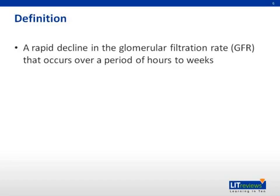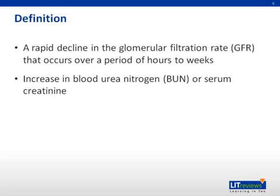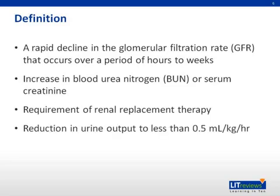Acute renal failure is defined as the rapid reduction of glomerular filtration rate that occurs over a period of hours to days. The rate of production of certain waste products exceeds the rate at which the kidney can excrete them, causing a buildup seen as an increase in serum blood urea nitrogen (BUN) or serum creatinine — this is called azotemia. Any significant rise in serum requiring renal replacement therapy, or a reduction of urine output to less than 0.5 milligrams per kilogram per day, can also be defined as acute renal failure.